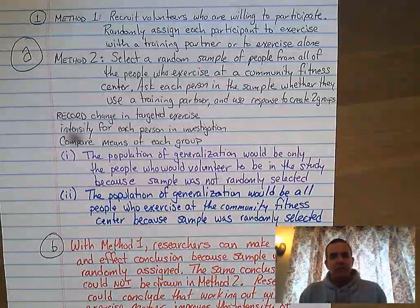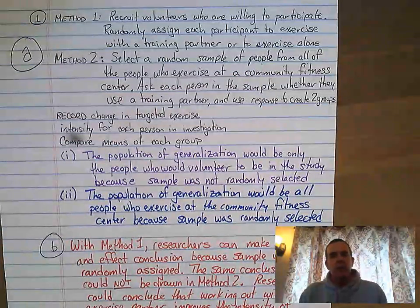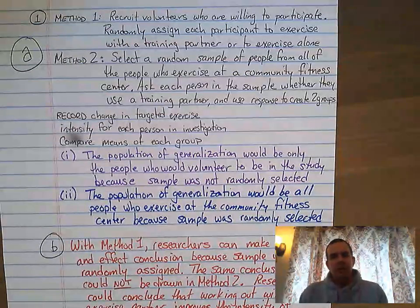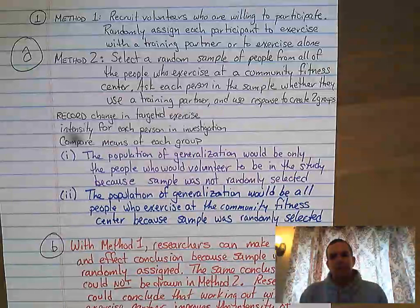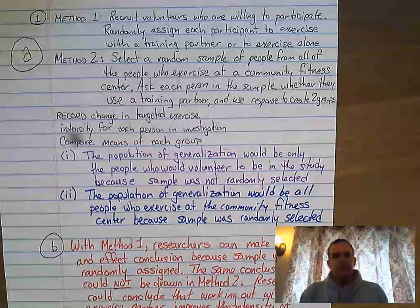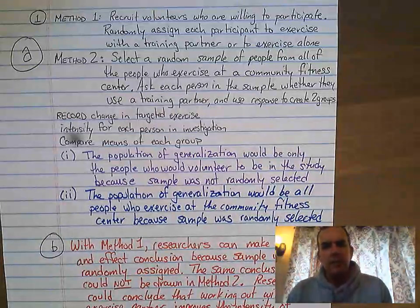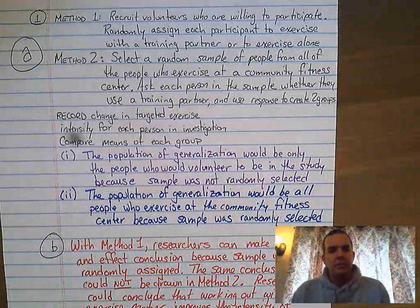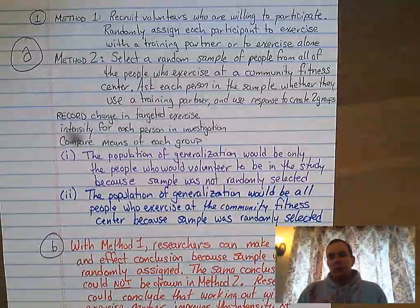The problem discusses two methods to develop a sample. Method one: recruit volunteers who are willing to participate, then randomly assign each participant to either exercise with a training partner or exercise alone. Method two: select a random sample of people from all of the people at the community fitness center and ask each person in the sample whether they use a training partner, and use that response to create two groups. They record the intensity of the workout.